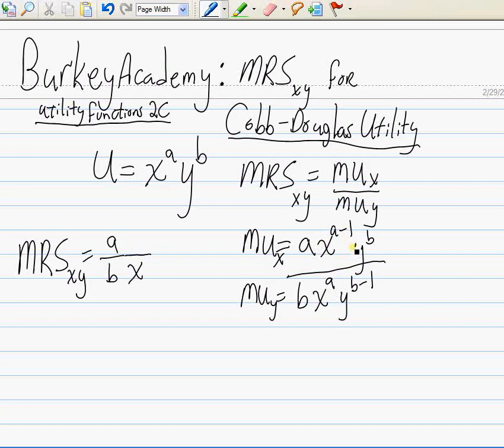And here we have a y to the b over a y to the b minus 1. And so what we're going to end up with here is y to the b minus, so it's b minus b minus 1. What's going to happen to those exponents?